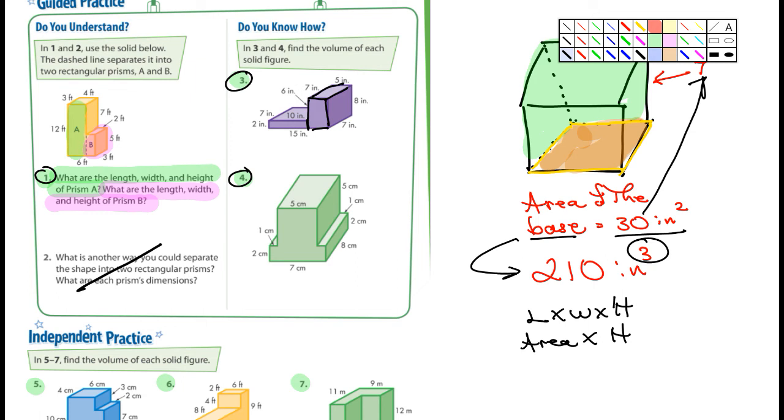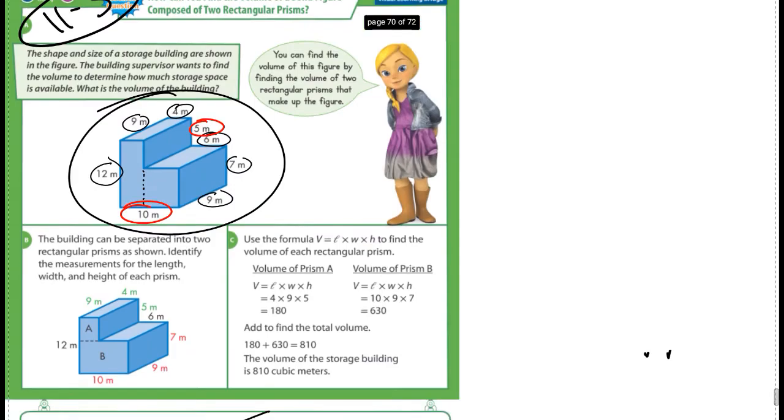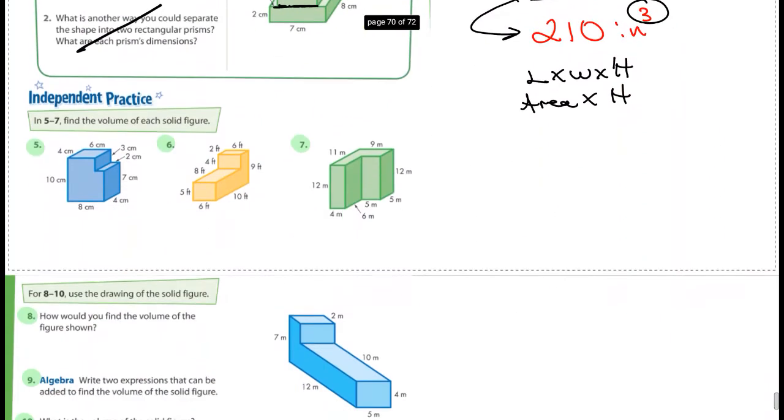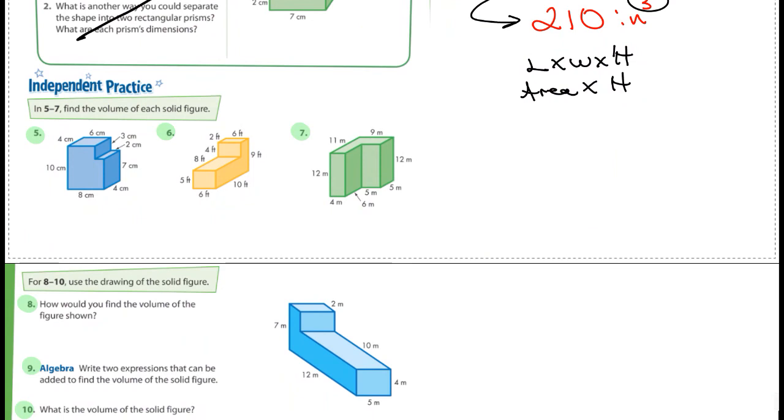For number four, probably the easiest way would be just to go with that figure and then go with the top figure and add them together. It's up to you. Five, six, and seven. Mark those. I want you to do those.